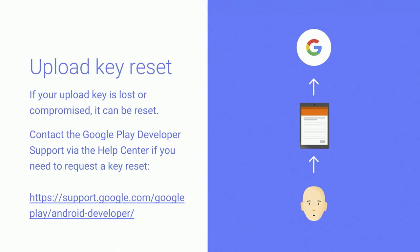You can find out more information about Google security practices in our public Google security white papers published online. Finally, I want to talk about the upload key. As James has explained, the upload key is used by Google Play to verify that the uploaded APK comes from the correct developer. We verify the validity of the upload key signature prior to signing with the app signing key. Unlike the app signing key, the upload key is only verified by Google Play and not the Android framework — meaning it's possible to reset it in case the developer loses it or it is compromised. If the upload key does become lost or compromised, you can contact Google Play developer operations and request that your upload key be reset to a new one that you generate. This process will take a couple of days as we will need to securely verify your identity, and then you can resume uploading APKs signed with your new upload key.